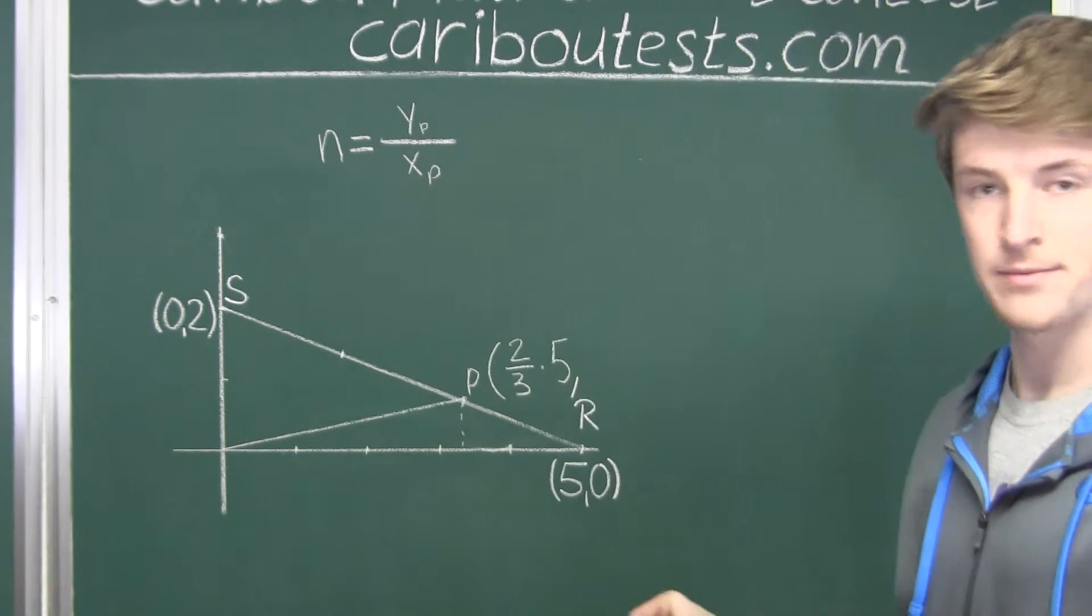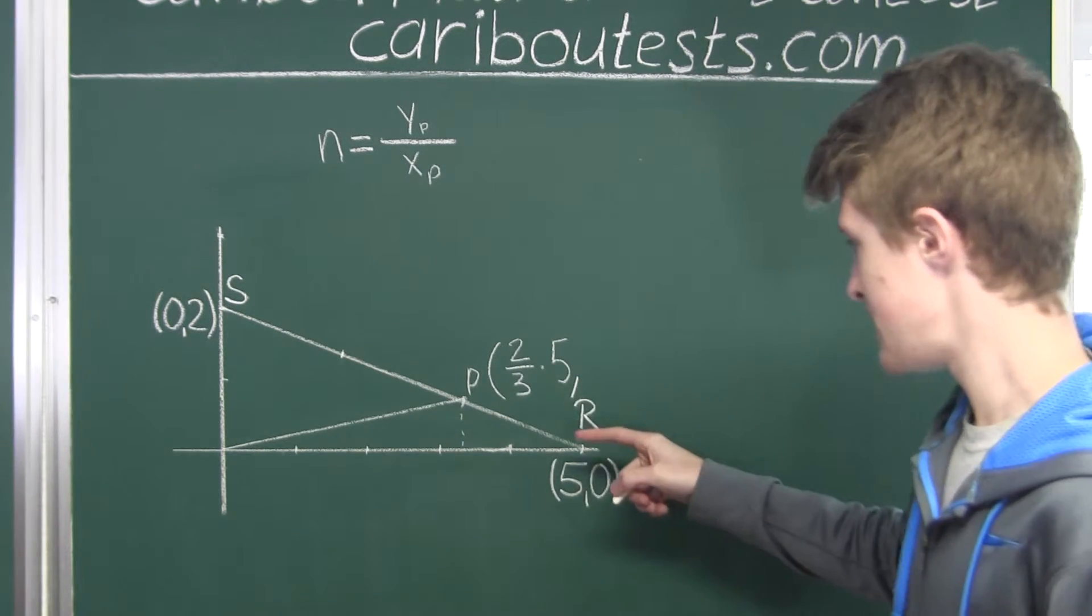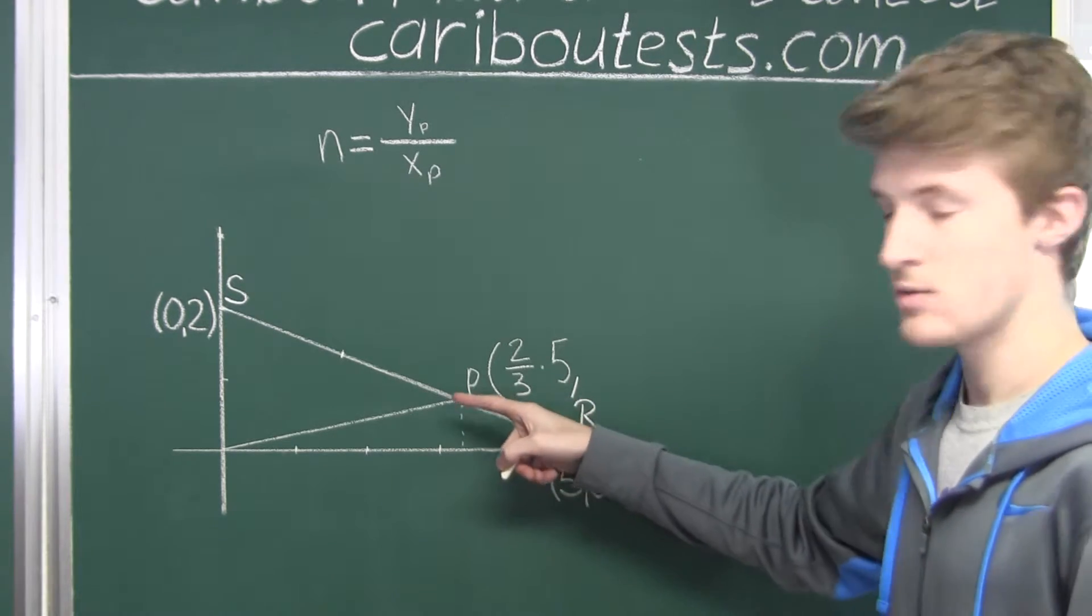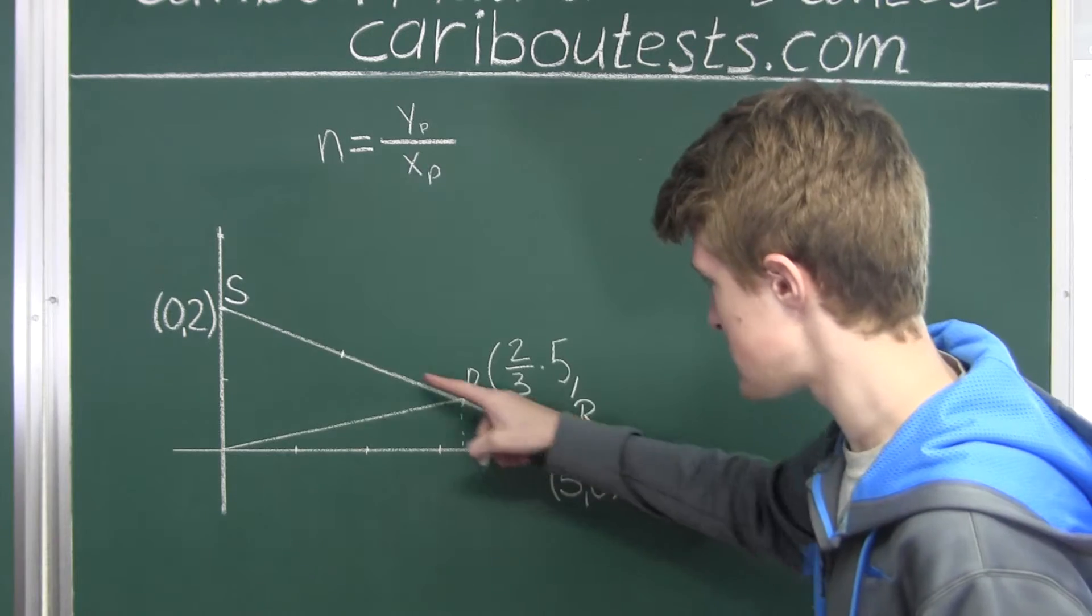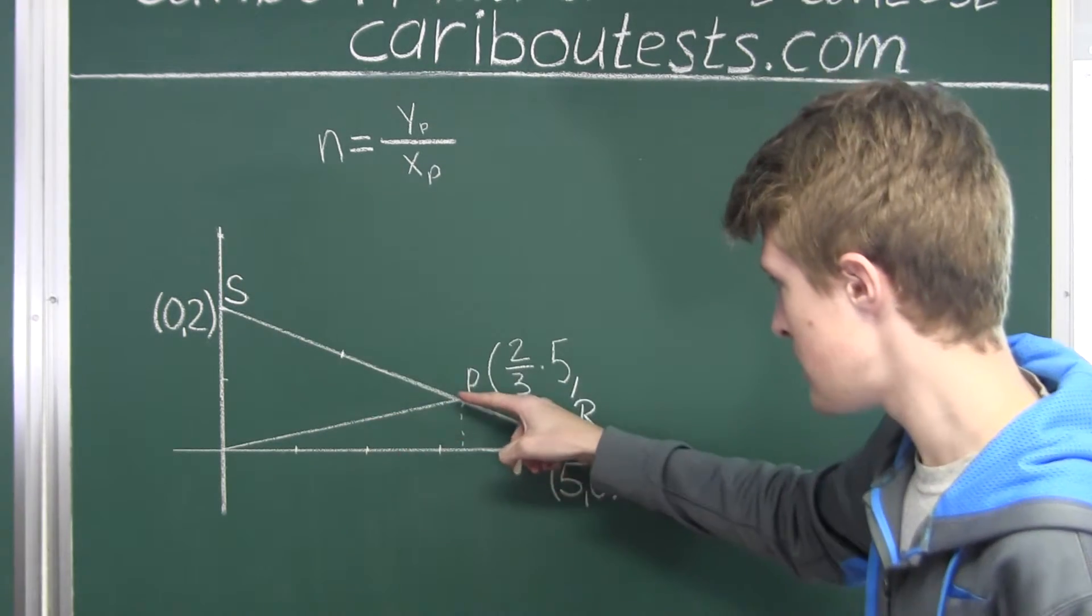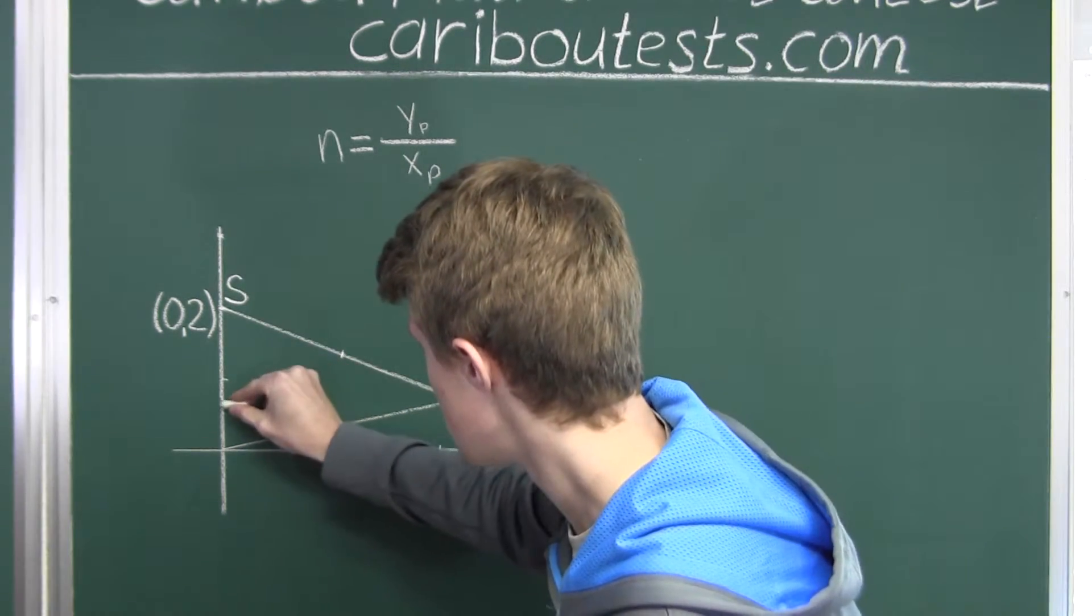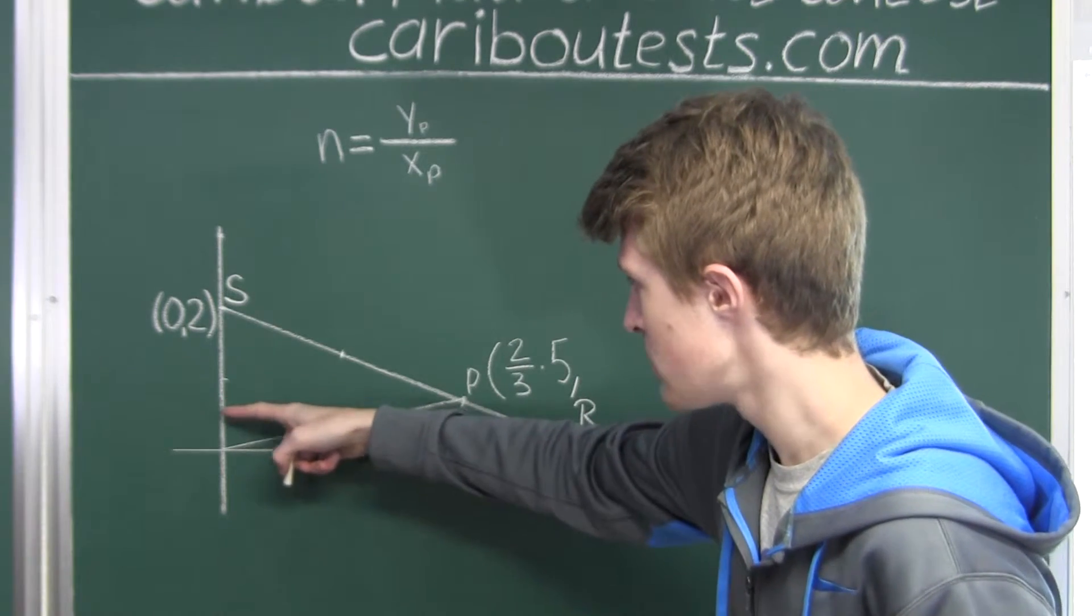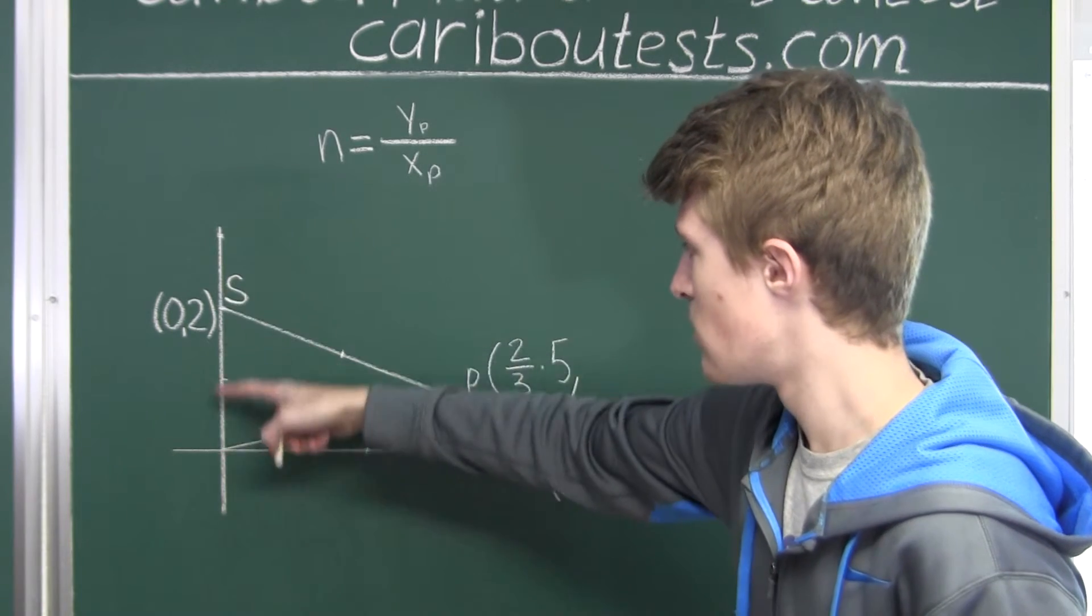And similarly, for the Y coordinate, if we say that this, again, this segment is 1 third of this full segment RS, well then if we go across, well then if we go across right here, this segment here would be 1 third of this full segment over here.